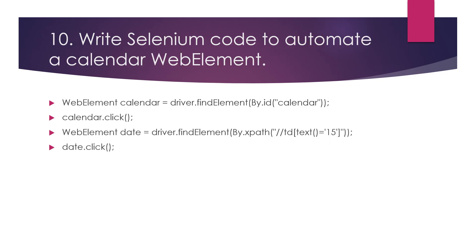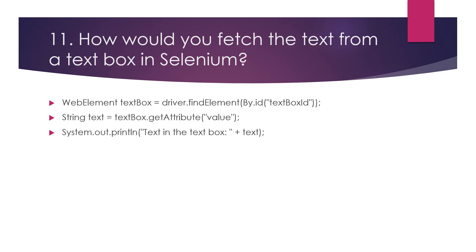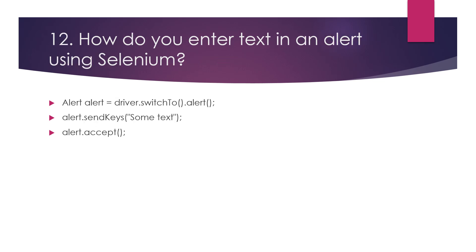For a Selenium code to automate a calendar web element, you use driver.findElement(By.id("calendar")).click(), then find the desired date element using its XPath and call date.click(). To fetch text from a text box in Selenium, use the getAttribute("value") method. To enter text in an alert using Selenium, use driver.switchTo().alert() and then call alert.sendKeys() with the desired text.